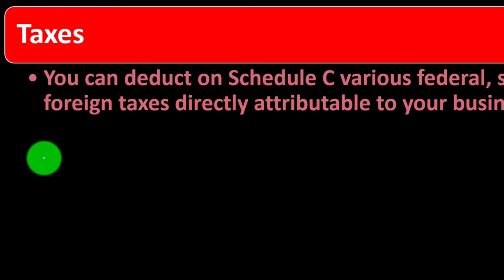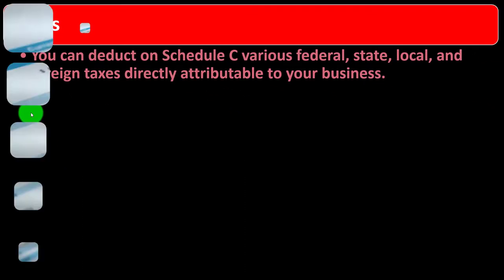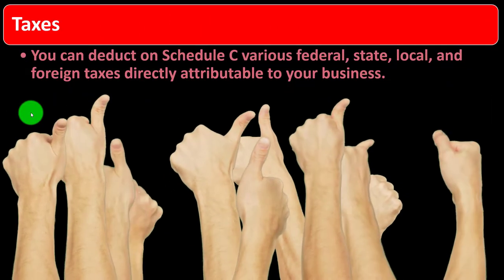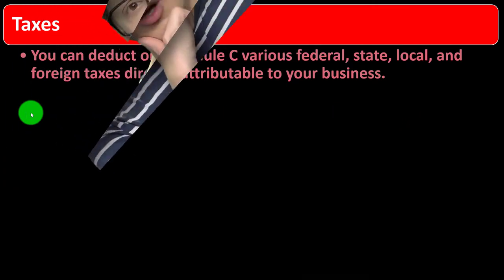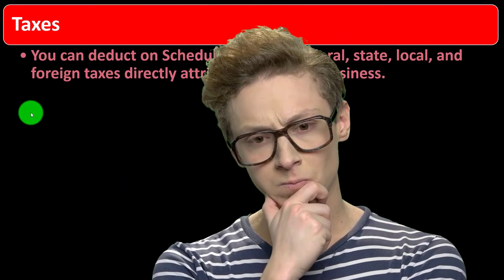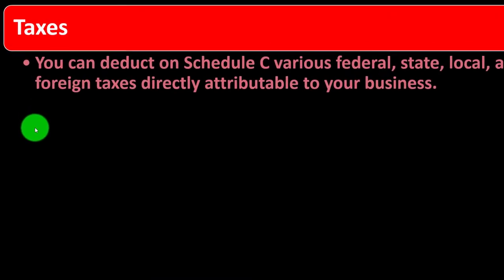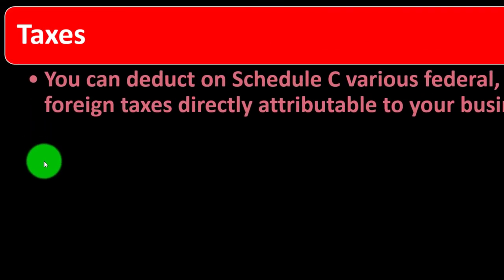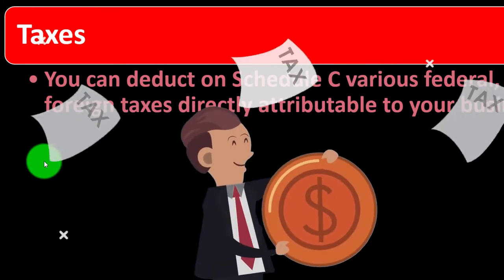We're now looking at expenses. The general rule is they must be ordinary and necessary. Expenses are good for taxes because they're basically deductions. We want to think about expenses specifically related to the business — not other expenses that could be deducted elsewhere, for example on Schedule A when thinking about things like taxes.